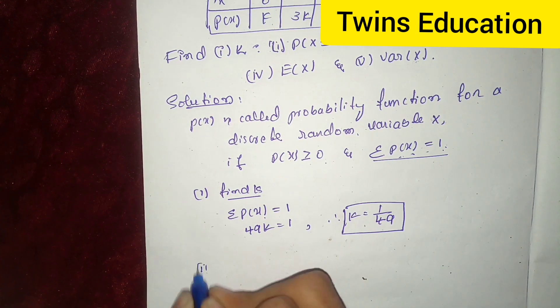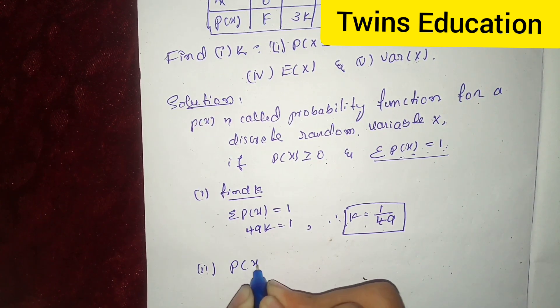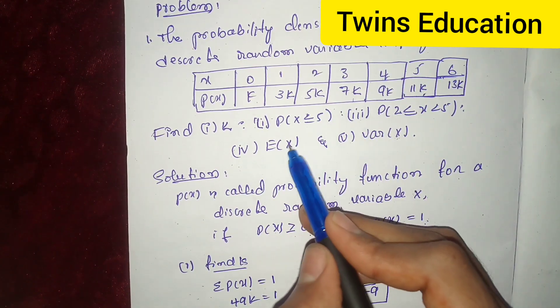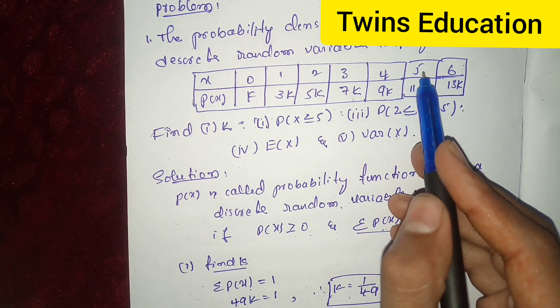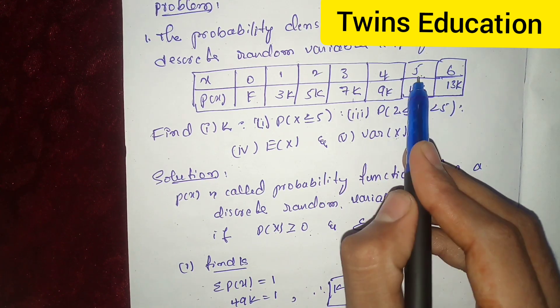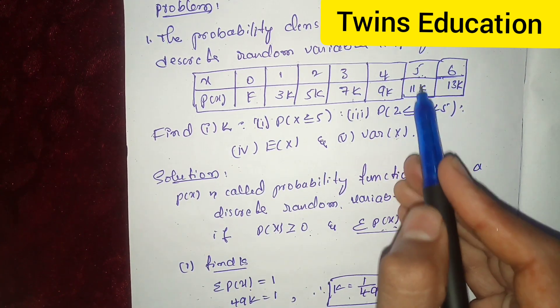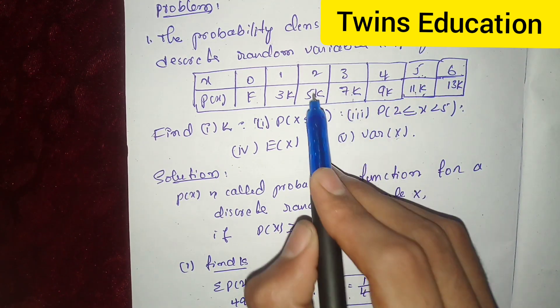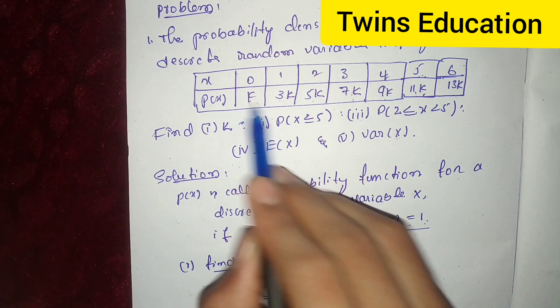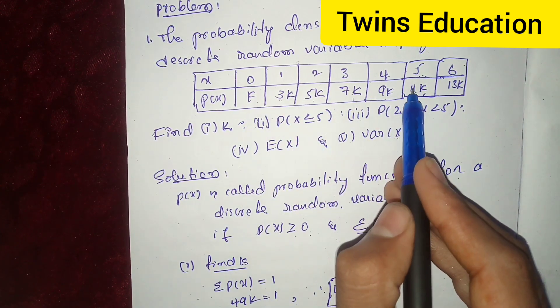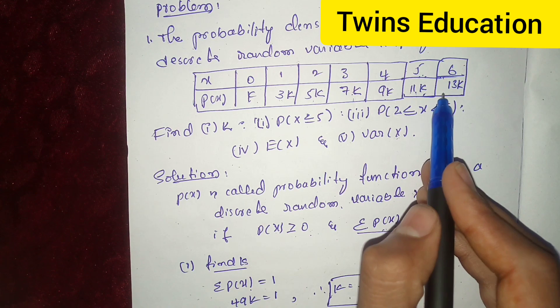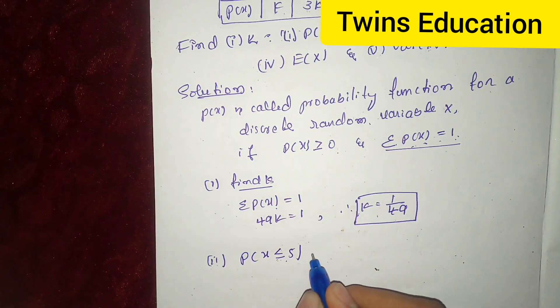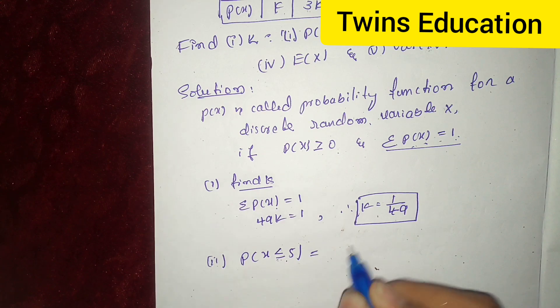Second condition. Find the value of p of x less than or equal to 5. See here in the tabular column where x is less than or equal to 5. Consider 5 and below. So here, 11k, 9k, 7k, 5k, 3k, k. Add these values less than or equal to 5 and neglect this, because less than or equal to 5 is the condition.